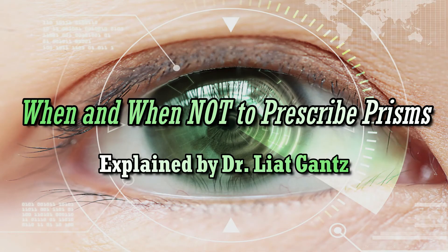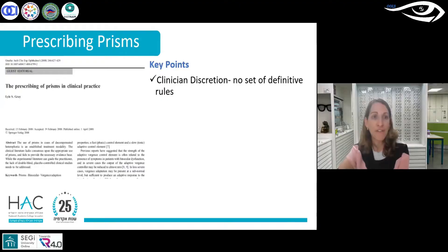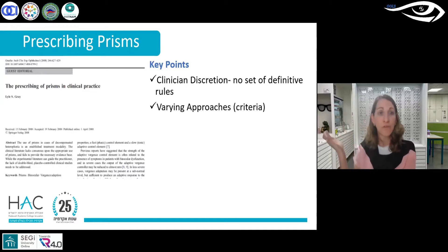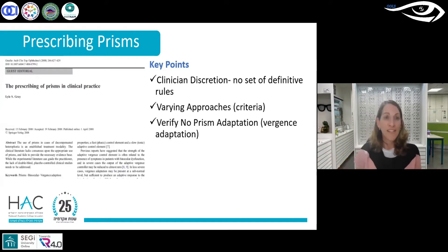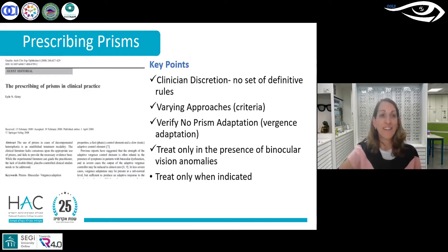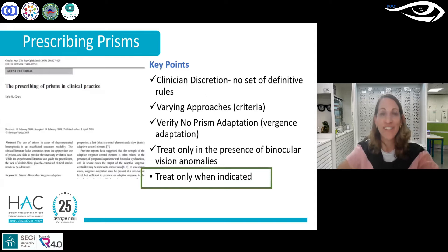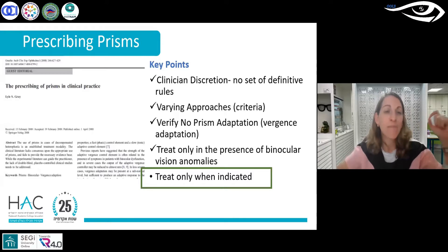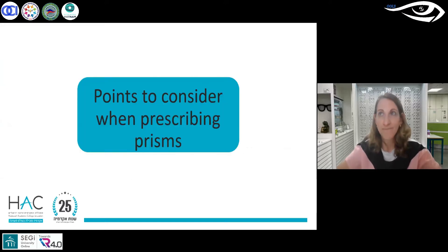Going back to key points: clinician discretion — there's no set of definitive rules for when to prescribe prisms. We talked about various approaches for horizontal and vertical prism, but you must verify there's no prism adaptation before prescribing. You only treat in the presence of binocular vision anomalies, and most importantly, only treat when indicated. If it ain't broke, don't fix it — we only prescribe prism when the patient presents with asthenopia.